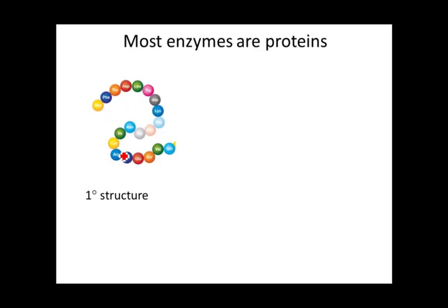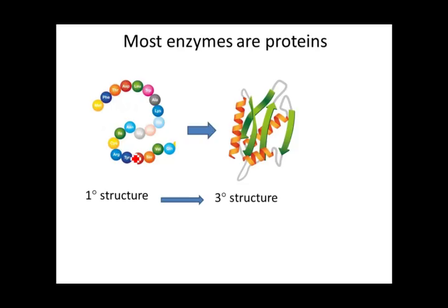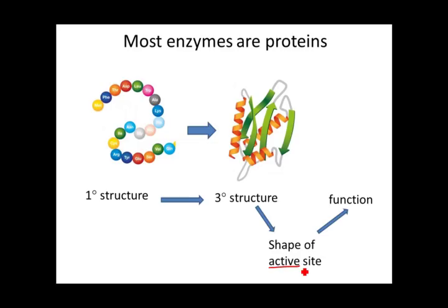Most enzymes are proteins. Proteins have primary structure — a sequence of amino acids — and that primary structure leads to tertiary structure, the overall three-dimensional shape. For enzymes, the shape we're most concerned with is the active site. The active site must have an exact, correct three-dimensional shape dictated by the tertiary structure. If it doesn't, the enzyme can't do its job. It needs a shape complementary to its substrate or substrates.